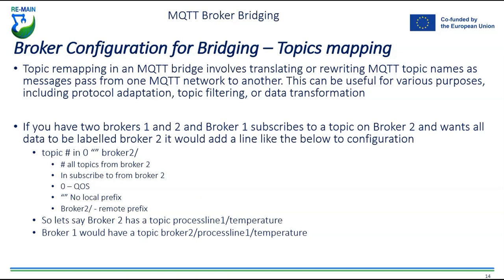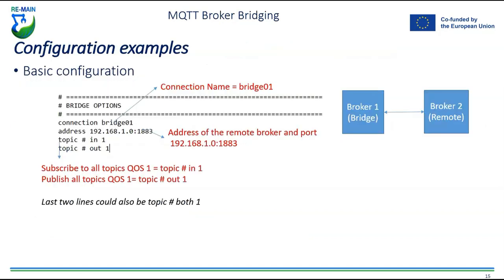Topic remapping in an MQTT bridge involves translating or rewriting MQTT topic names as messages pass from one MQTT network to another. This is useful for protocol adaptation, topic filtering, or data transformation. If you have two brokers and broker one subscribes to topics on broker two and wants all data labeled with a prefix 'broker two', you add a line to the configuration. A basic configuration example includes: connection name, address and port, subscribing to all topics at QoS level one, and publishing all topics at QoS level one without any topic name transformation.